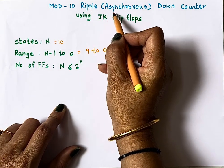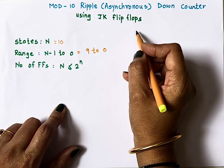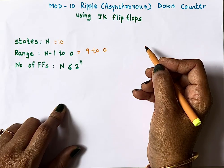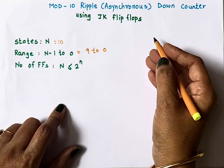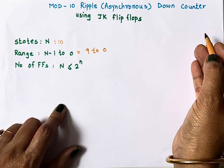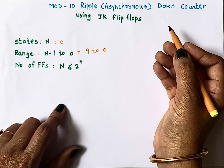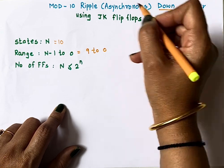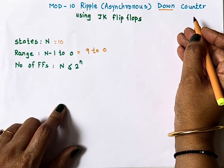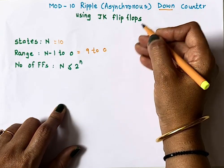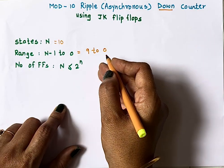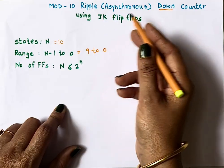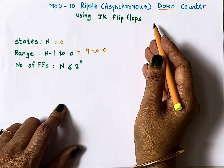A ripple counter is nothing but an asynchronous counter — the clock is not simultaneously connected to all flip-flops. The clock is connected to only one flip-flop, and the output of the first flip-flop acts as the clock input to the second, and so on. In a down counter, the Q-bar output of each flip-flop is connected to the clock input of the next flip-flop.